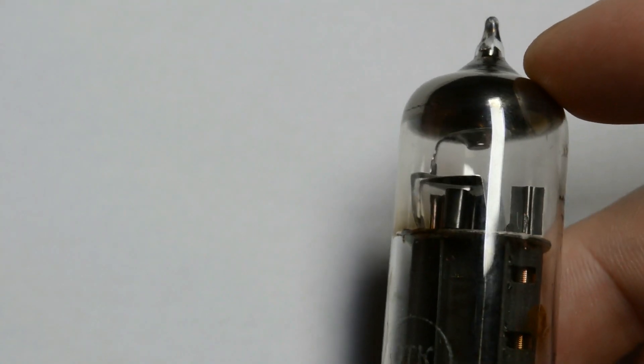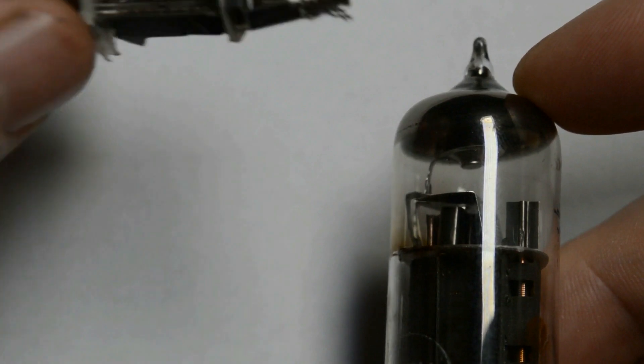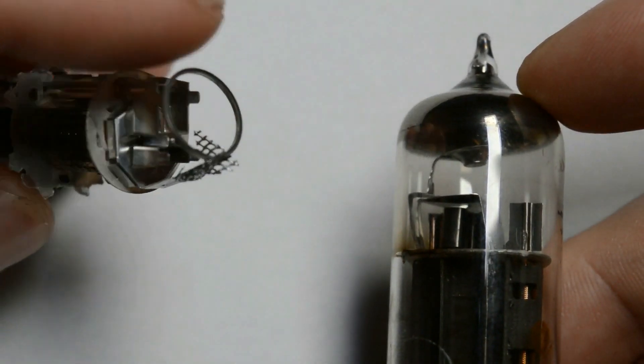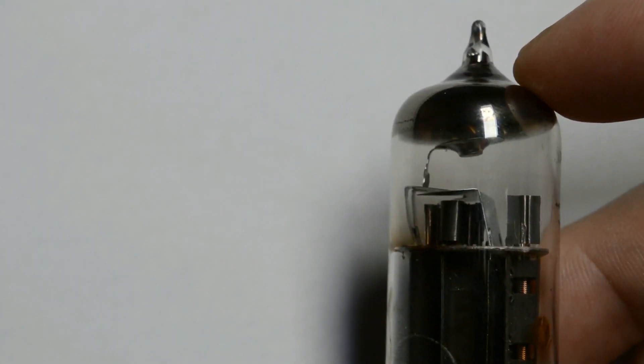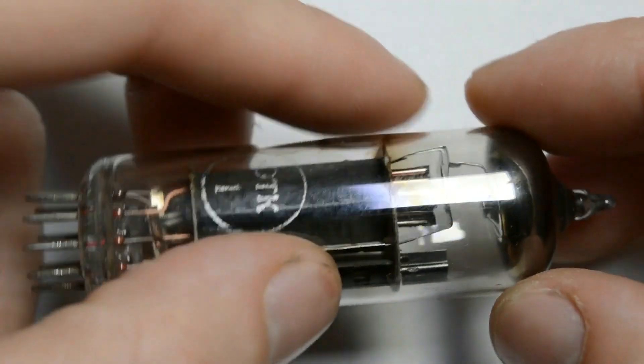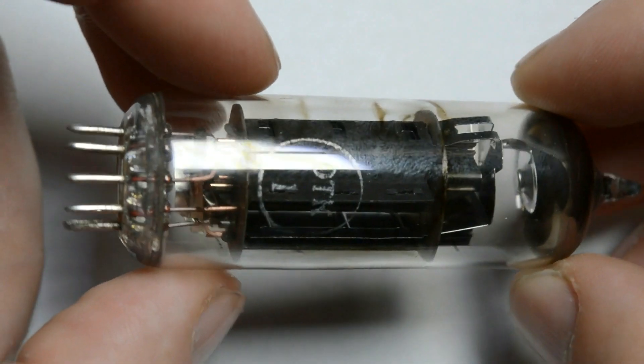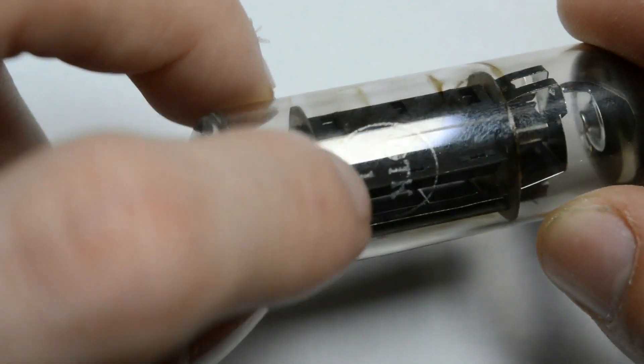An easy way to separate the Russian manufactured tubes from other tubes is by the type of the getter. You can see here that the getter is in the shape of a saucer, whereas in other tubes, it's in the shape of a ring. This is the first clue to show you that this is a Russian-made tube.